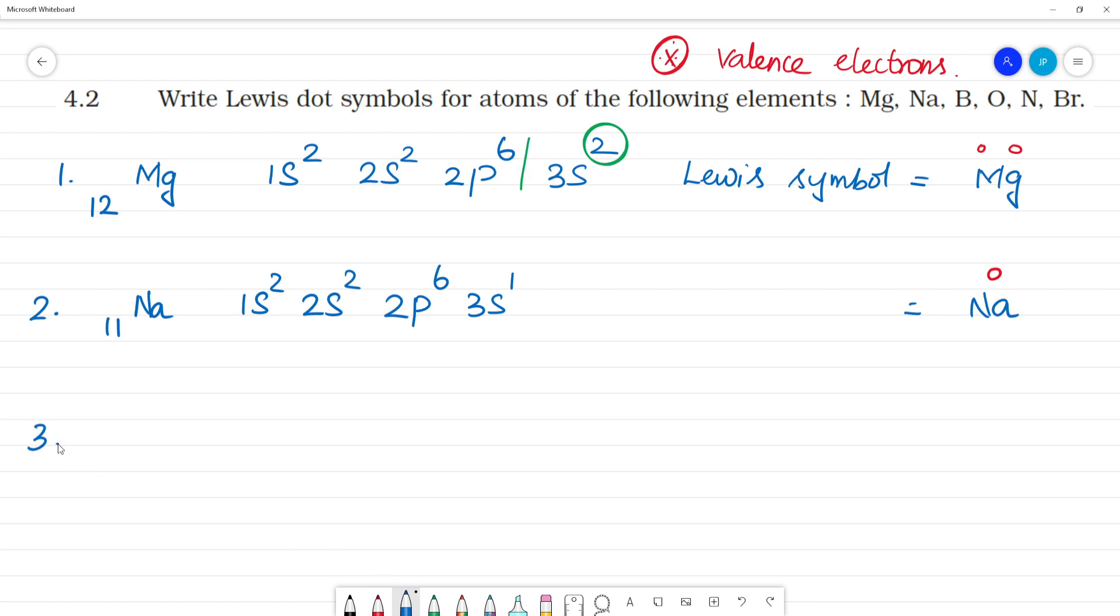Next, third one. The one electron is the outermost element, the valence electron. Third one, the Lewis symbol is boron.